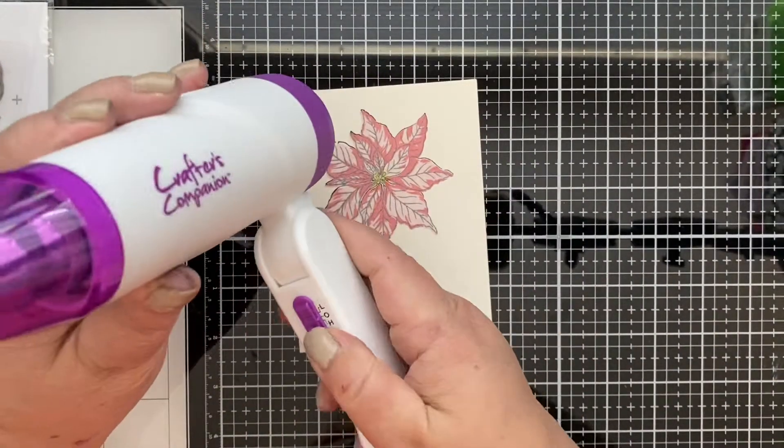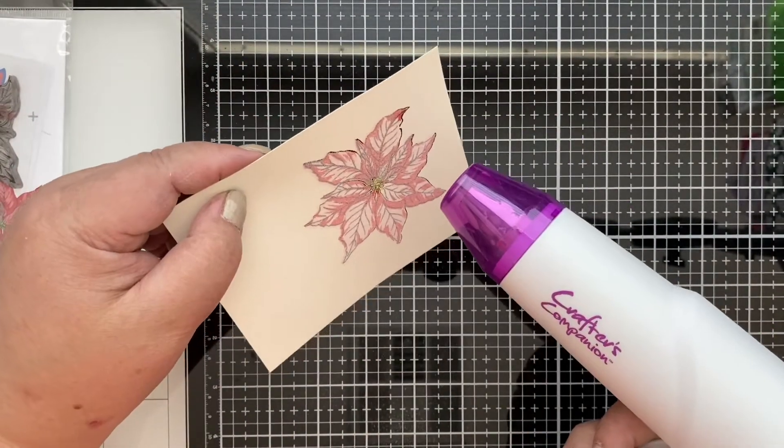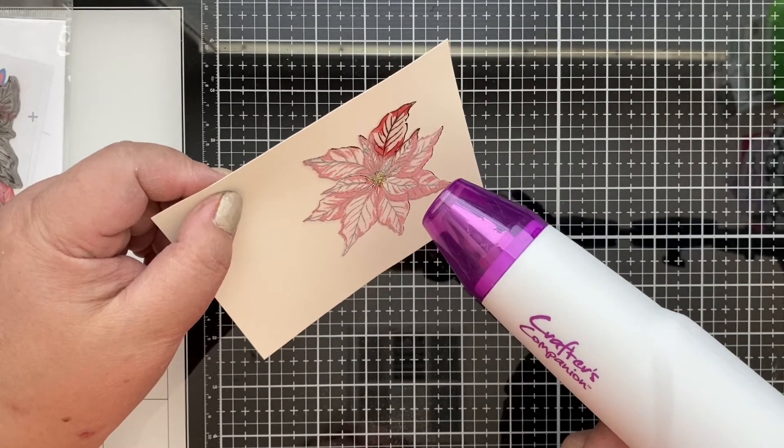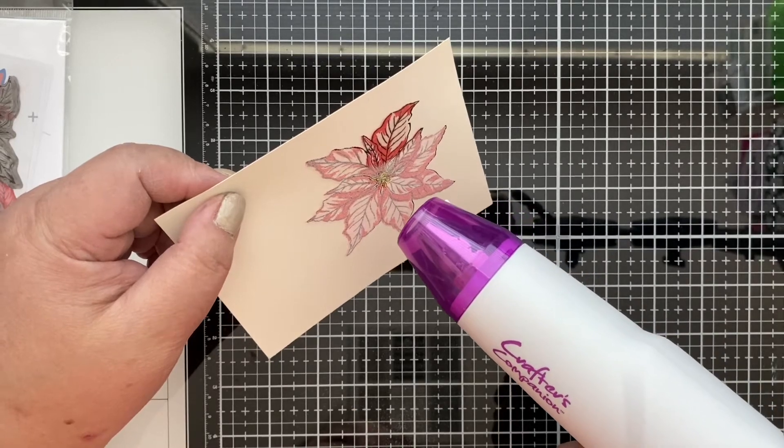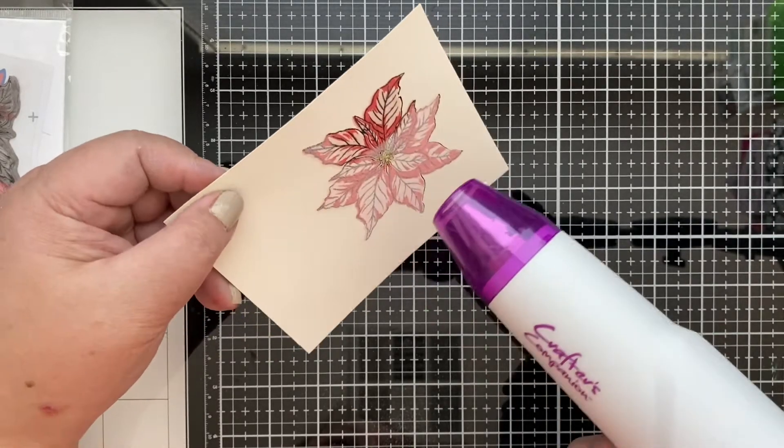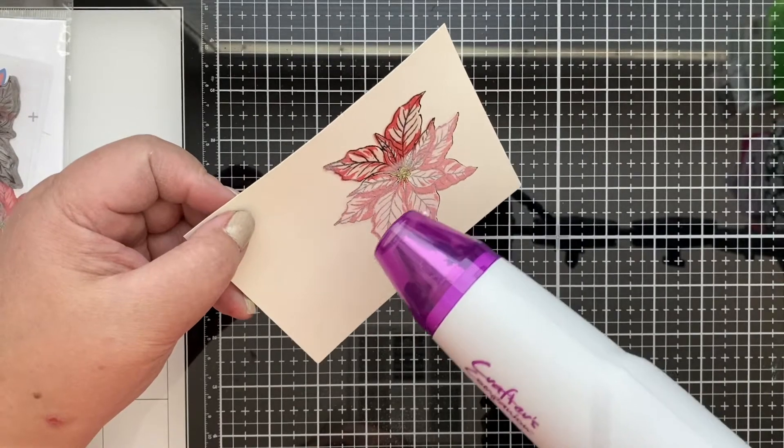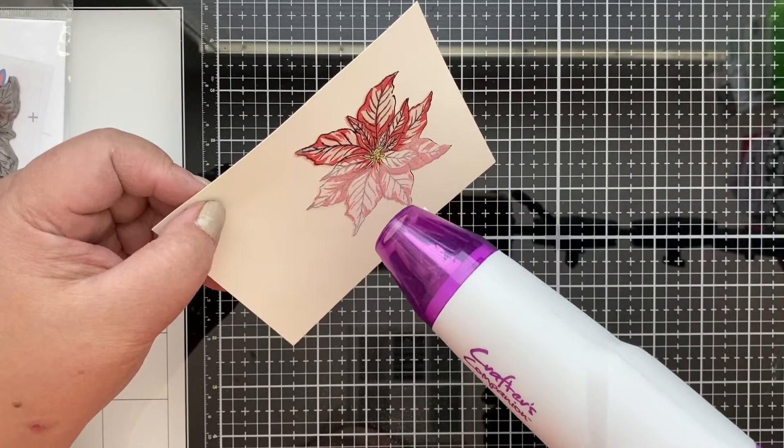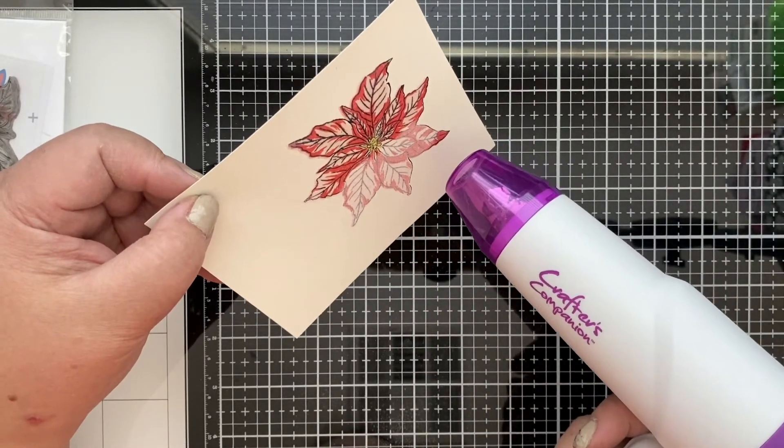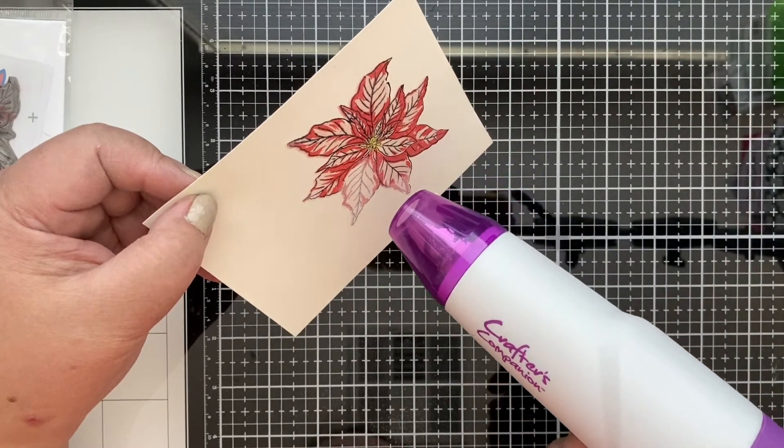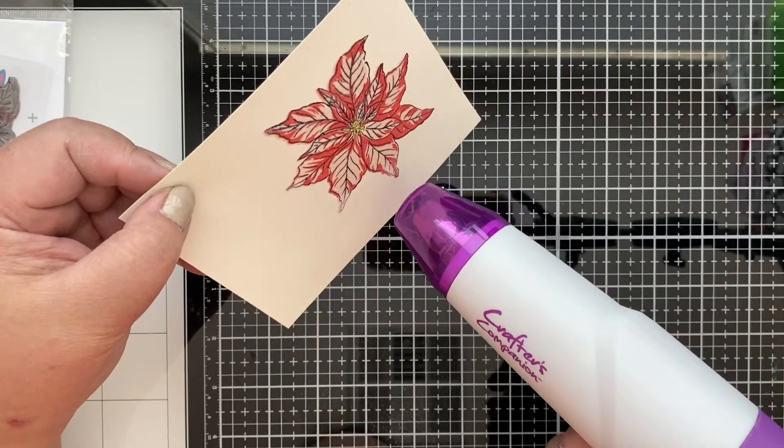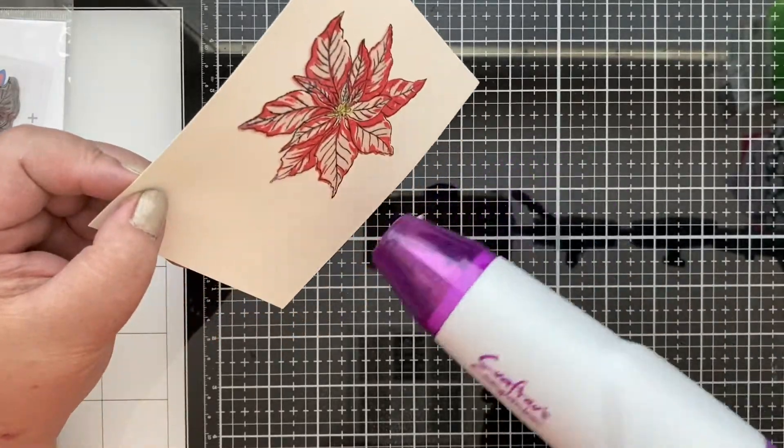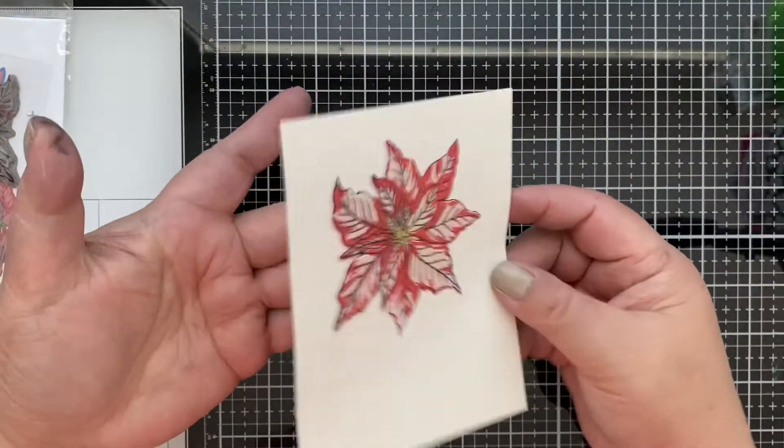And heat up our gun. Let's heat up our image. I love it when the embossing powder starts melting. I love watching that, as you can tell the difference. So let's cool this down.